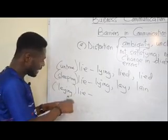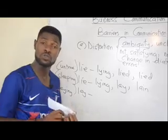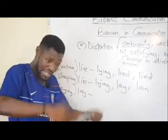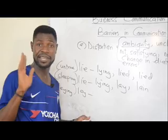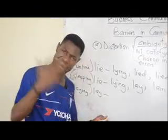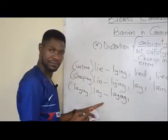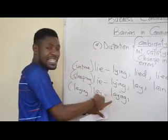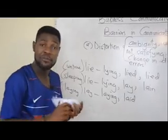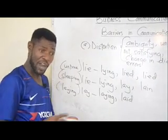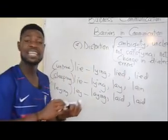Now let's come to laying. In SHS those days, your seniors would force you to lay your bed before you go to class. You lay your bed nicely. While you are doing it — in the course of doing it — you are laying your bed. The past tense of laying your bed is 'laid.' Yesterday, before I went for lectures, I laid my bed. The past participle is also 'I have laid my bed.'